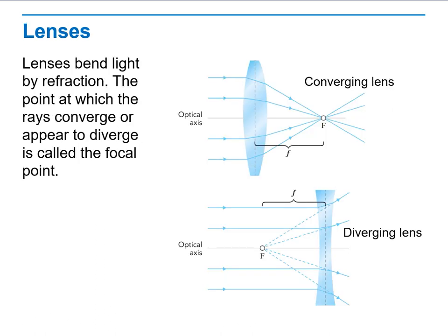Now, this is a very important concept in physics. Lenses. Lenses bend light by refraction. The point at which the rays converge or appear to diverge is called the focal point.